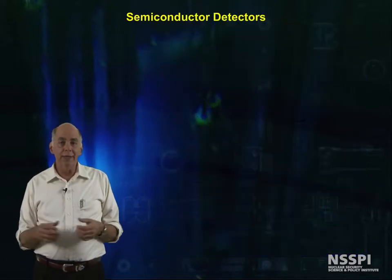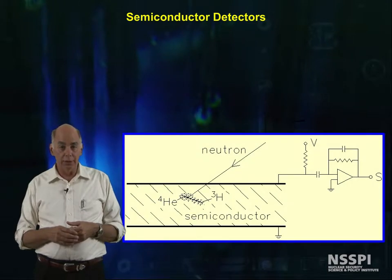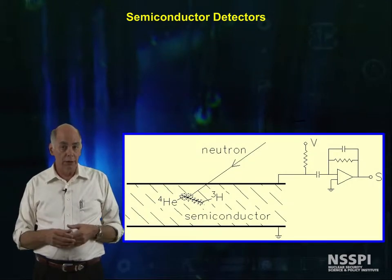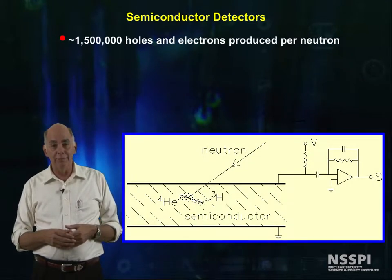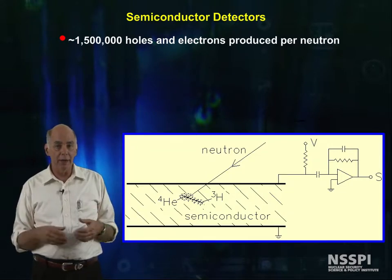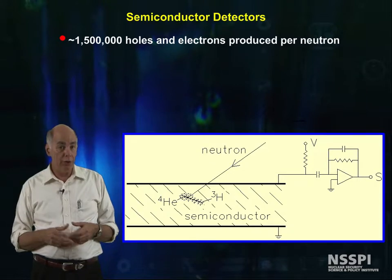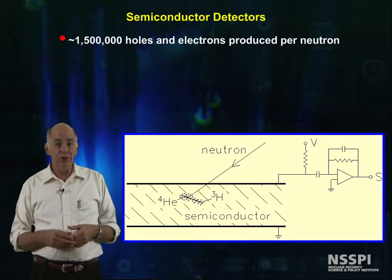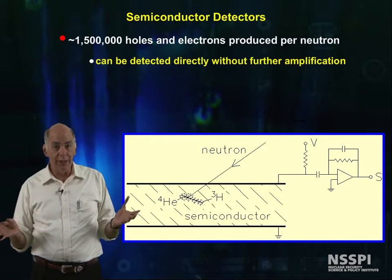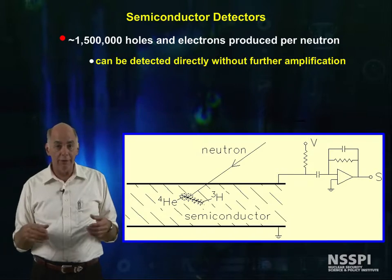We can also use semiconducting materials to build a detector for neutrons. The good news about this type of detector is that you have about 1.5 million hole-electron pairs produced per neutron interaction. This signal is so large that it can be detected directly without further amplification.